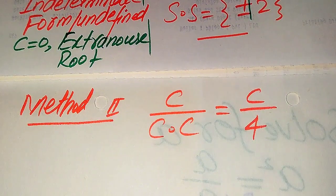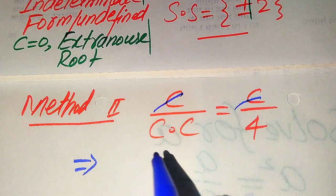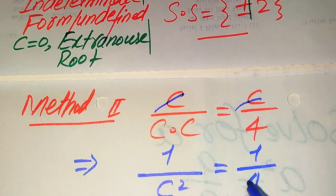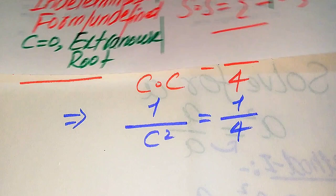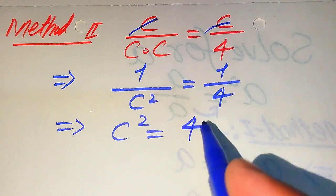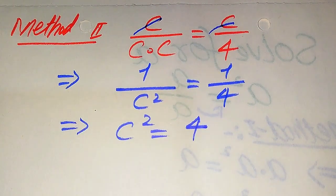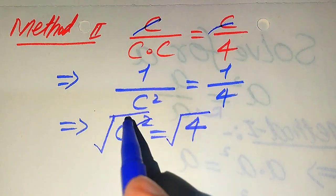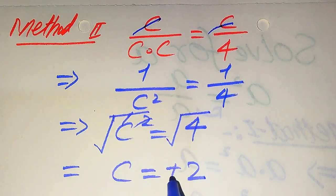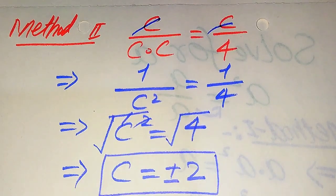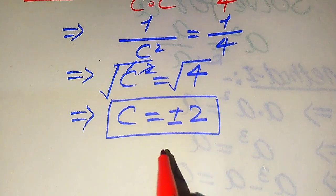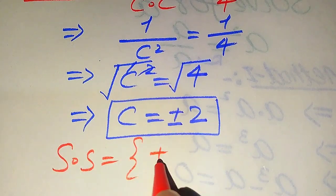In the second method, the c in the numerator is cancelled by the c in the denominator directly, giving 1 divided by c squared equals 1 divided by 4. Cross multiplying gives c squared equals 4. Taking the square root on both sides, the square root and square cancel, and we get c equals plus or minus 2. Since we already verified these values satisfy the equation, the solution set is plus or minus 2.